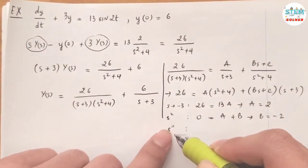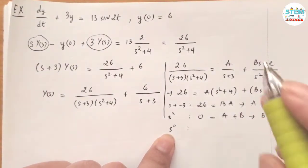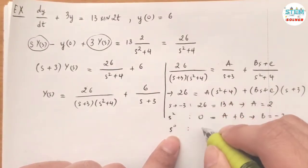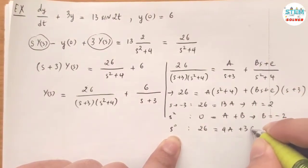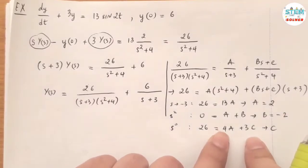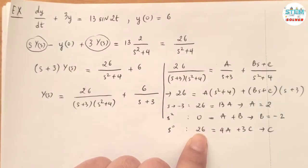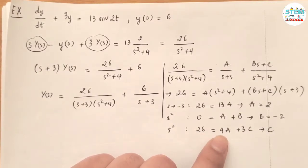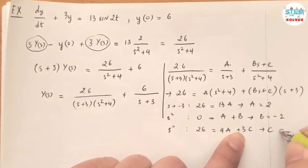Now looking at the s to the zero (constant) term — it's easier to go directly to the constant term rather than s to the first. On the left I get 26; on the right I get 4A plus 3C. Since A equals 2, that gives 26 equals 8 plus 3C, so 3C equals 18, which means C equals 6.